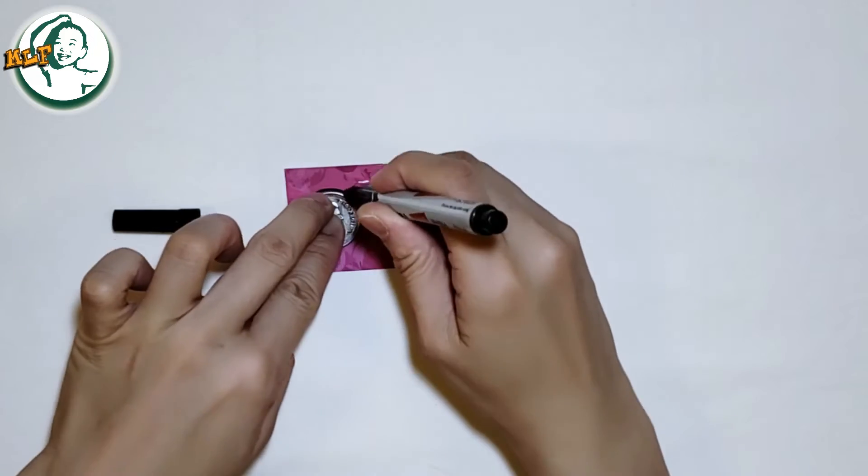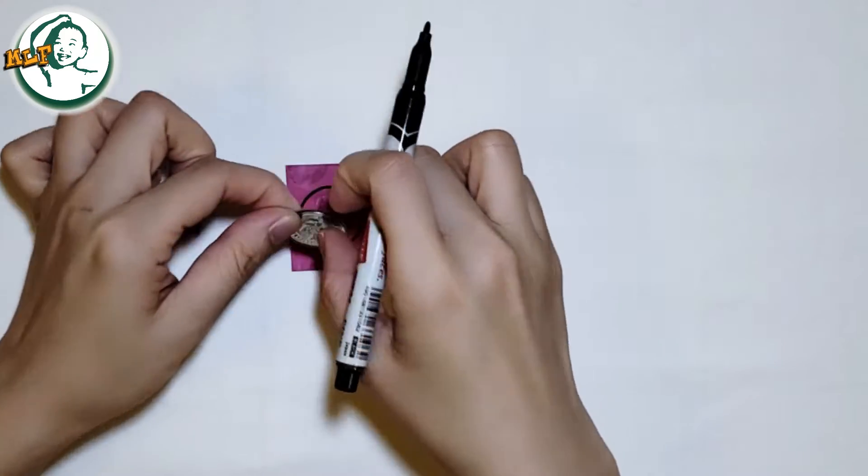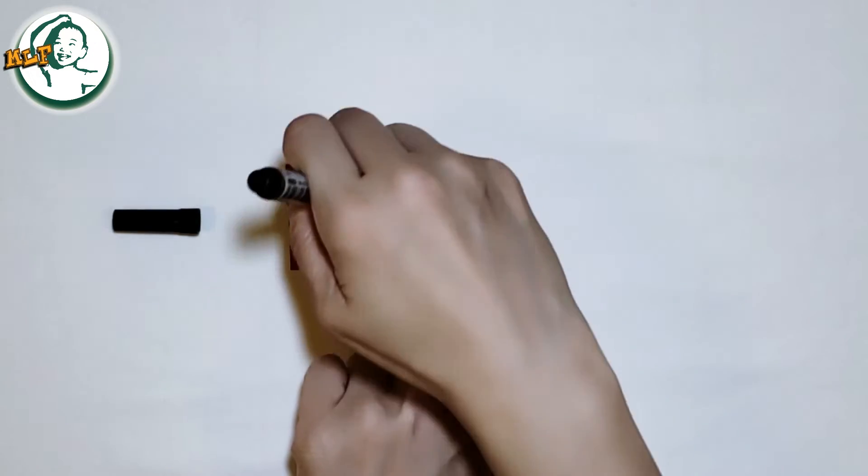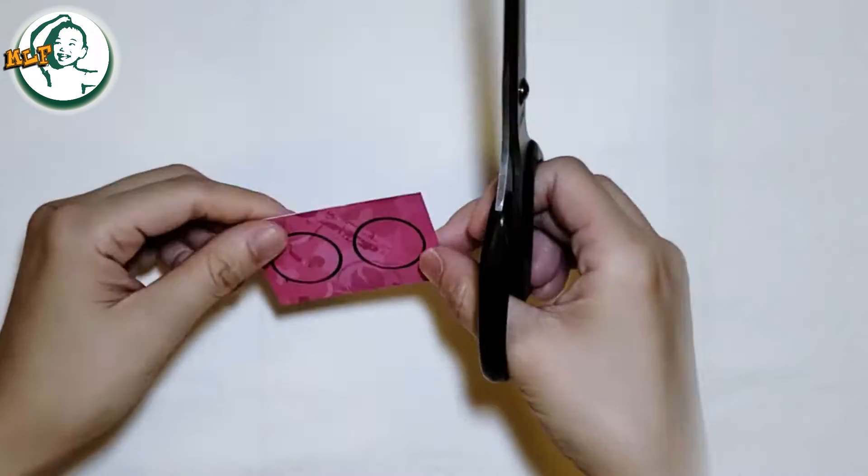We need to cut two circles for attaching the paper strips. Use a coin to trace two circles and cut them out with scissors.